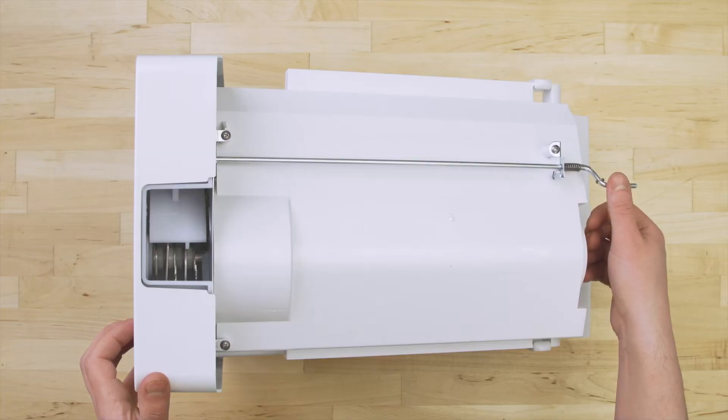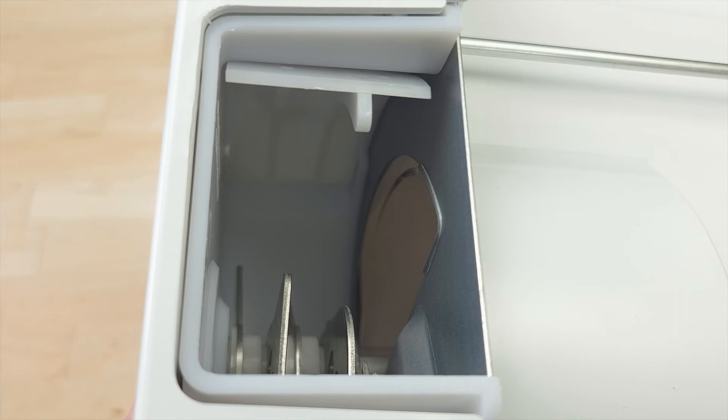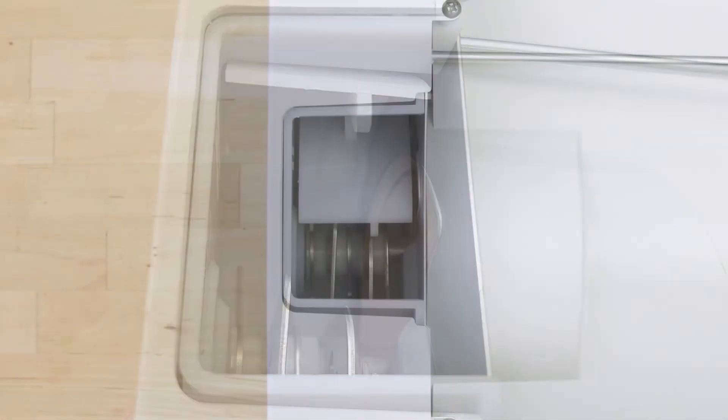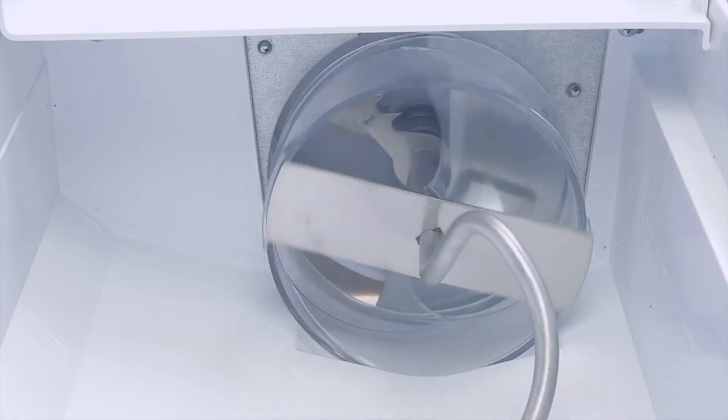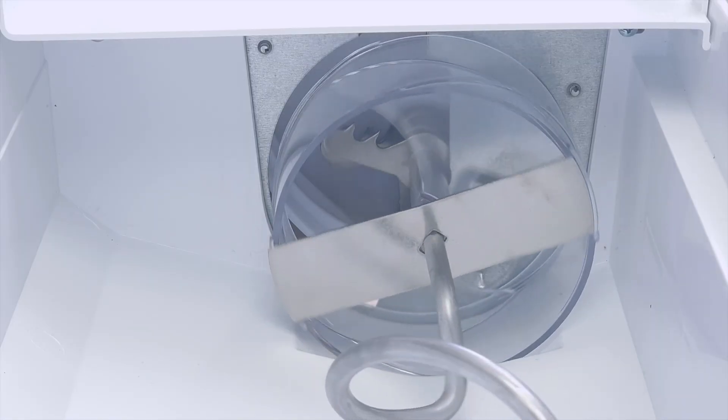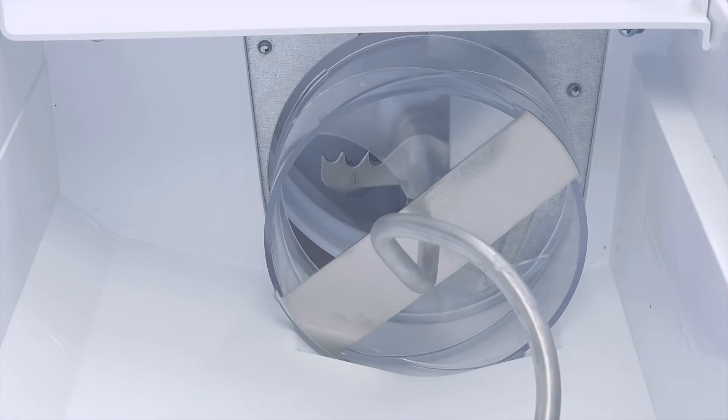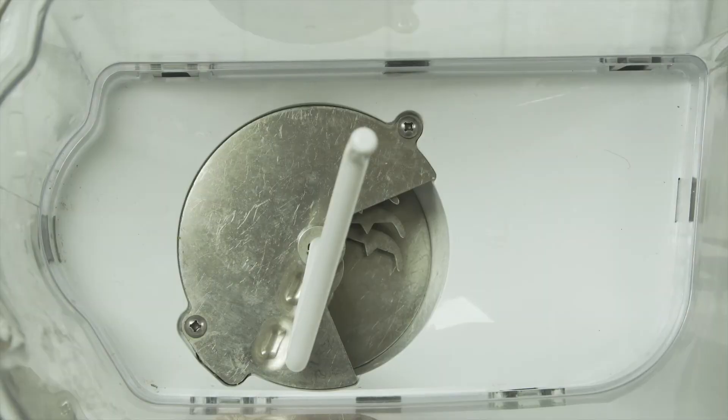When you select cubed ice, a solenoid will open a flap and allow the cubes to fall down the chute. When you select crushed ice, the flap will stay closed and the ice is crushed between several blades. Some models do not have a solenoid. Instead, the motor will switch directions to crush the ice.